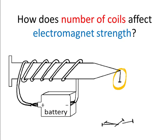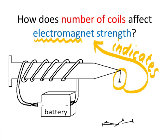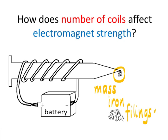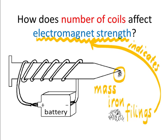Instead of using the number of pins picked up as an indicator of electromagnet strength, why don't we rather use the mass of iron filings picked up? Iron filings are small little shavings of iron.